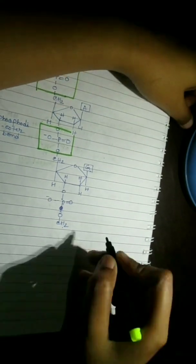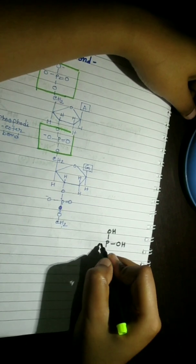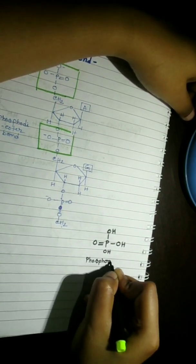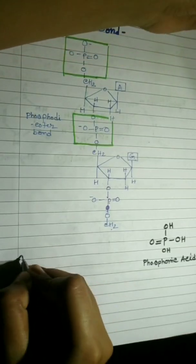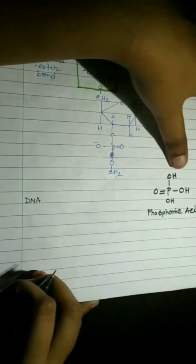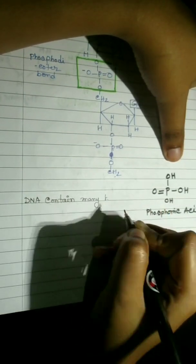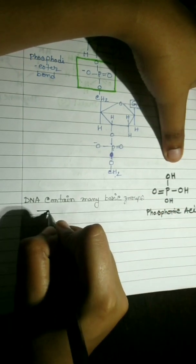Despite the fact that DNA does contain many basic groups, their basic properties are masked or hidden somewhat because of the fact that they hydrogen bond with each other to form base pairs. Hence, it's the acidic part of the molecule that dominates and that is why we know DNA as an acid.